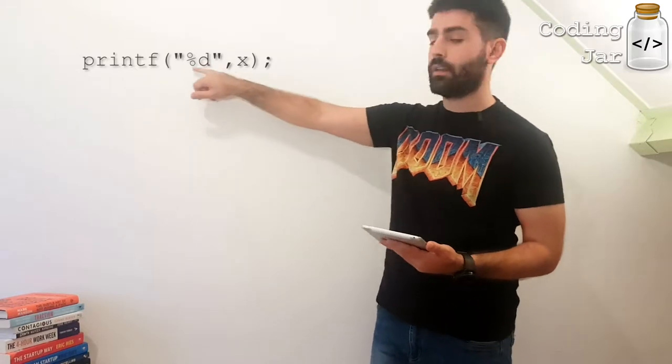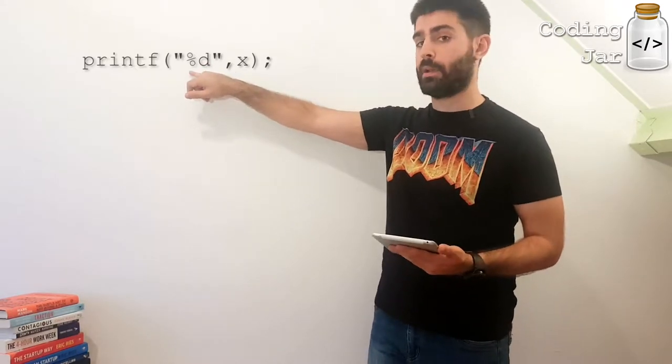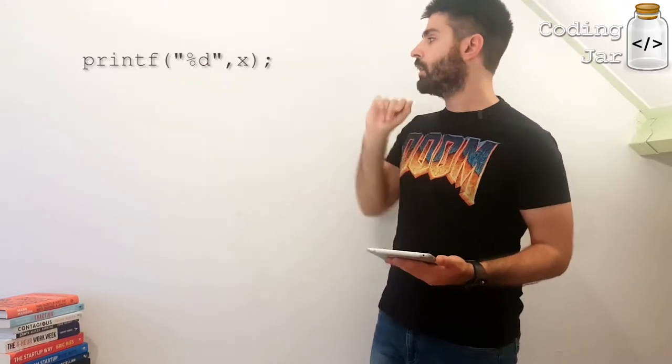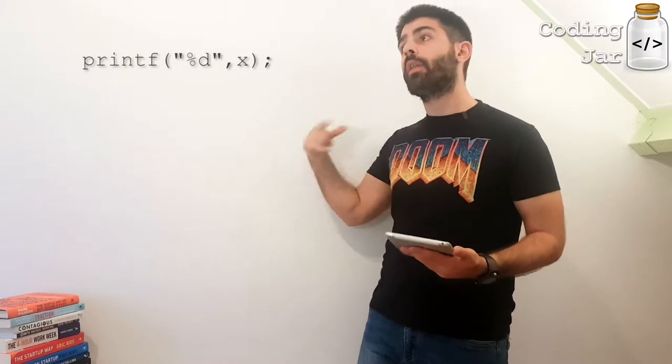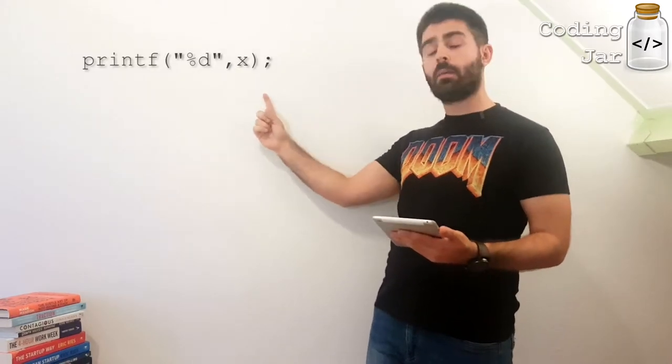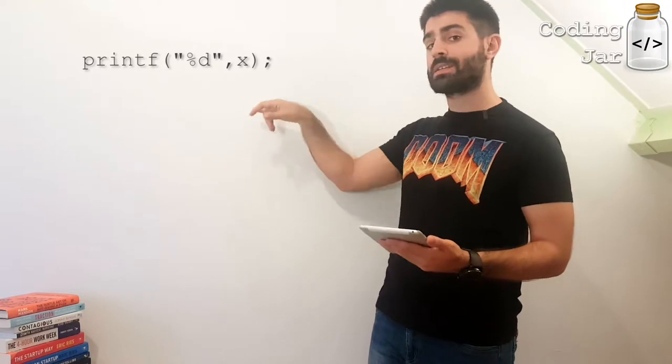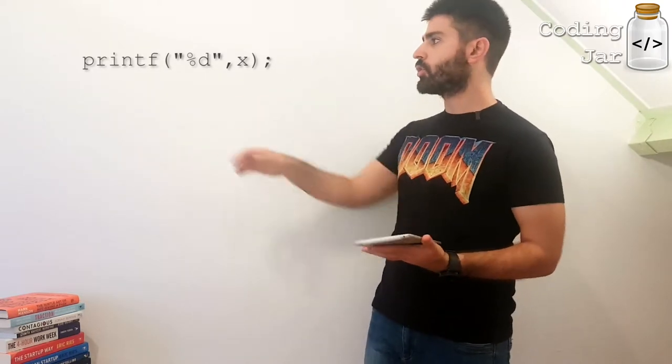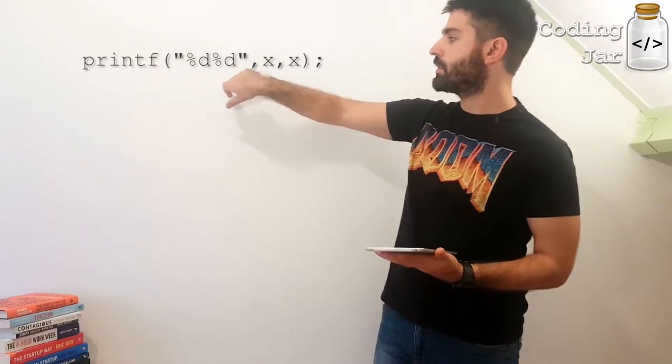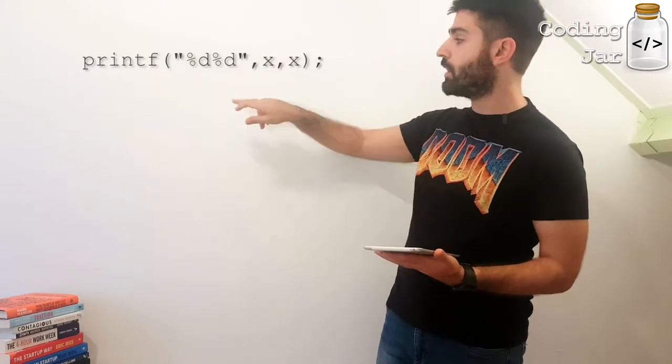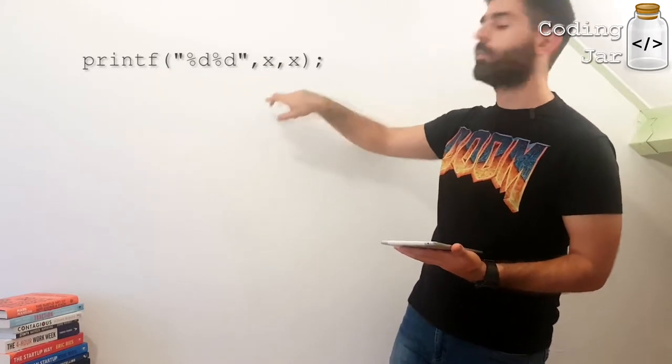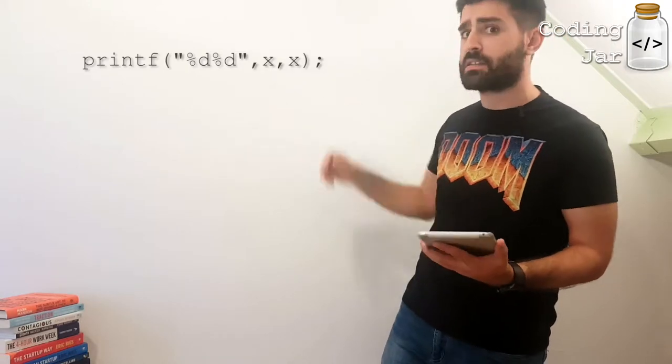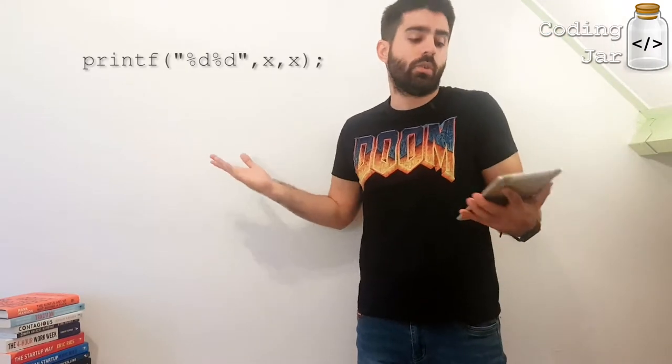For every flag printf finds, for every placeholder if you want, you have to have that many variables with commas, comma-separated variables after the double quotation marks. So if we had %d, %d, then we would need to have comma x and comma some other variable, or comma x again if that's what you want to print.